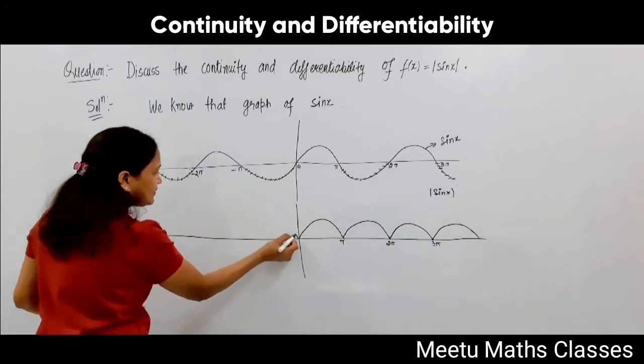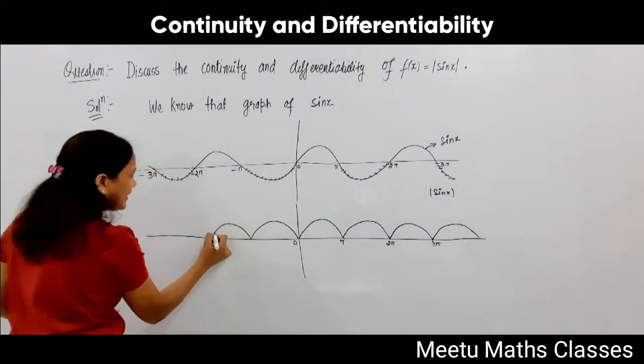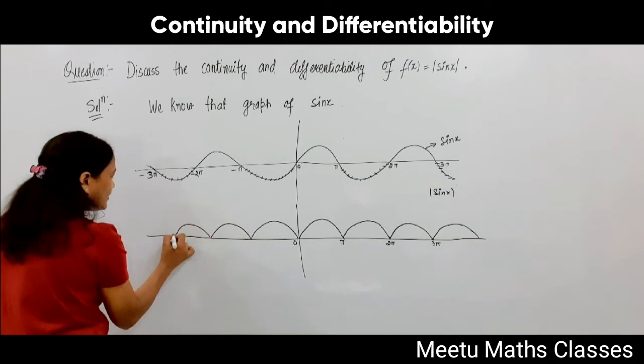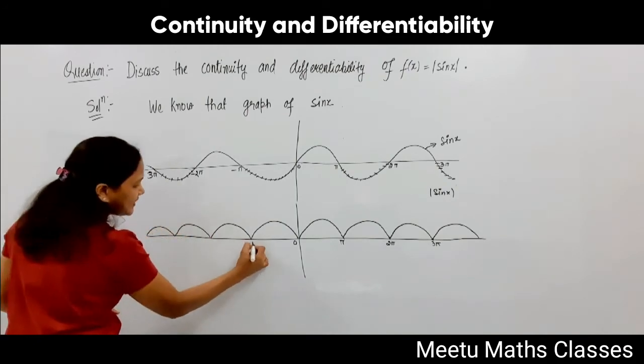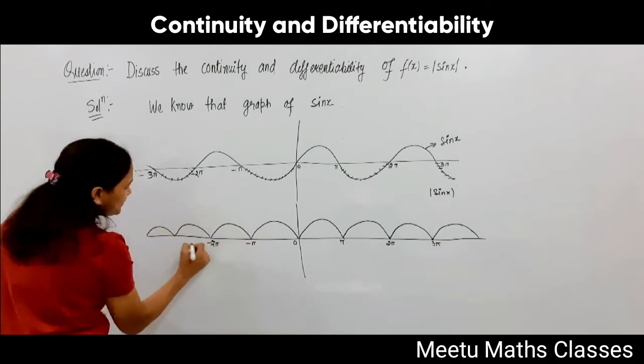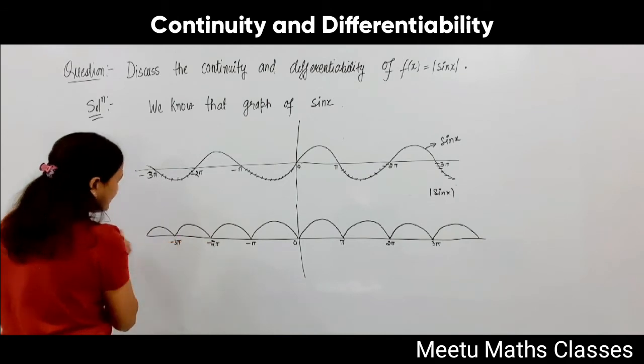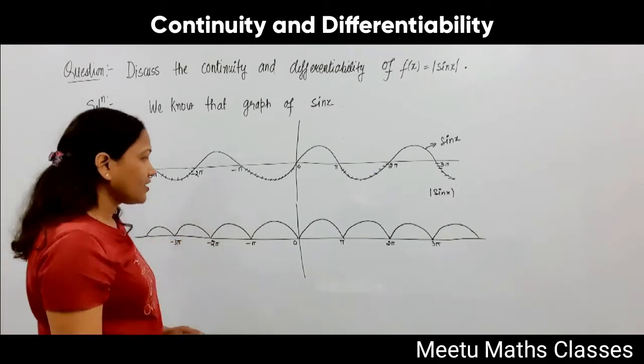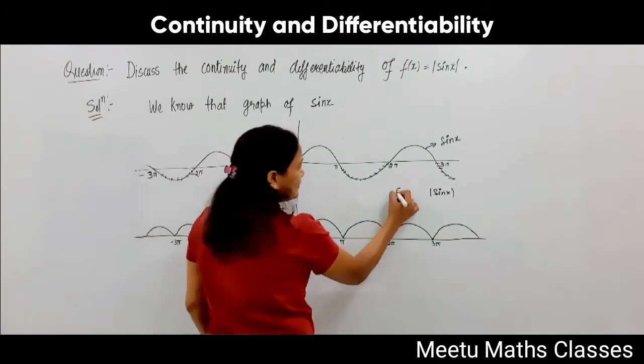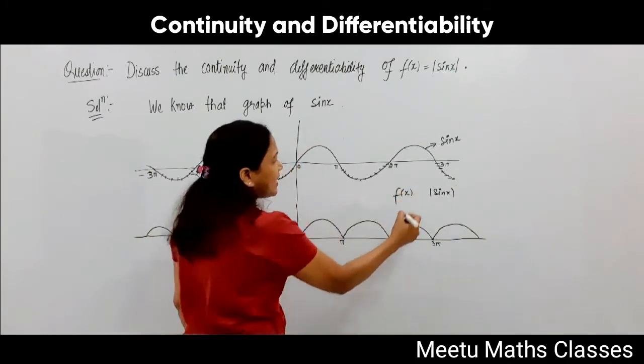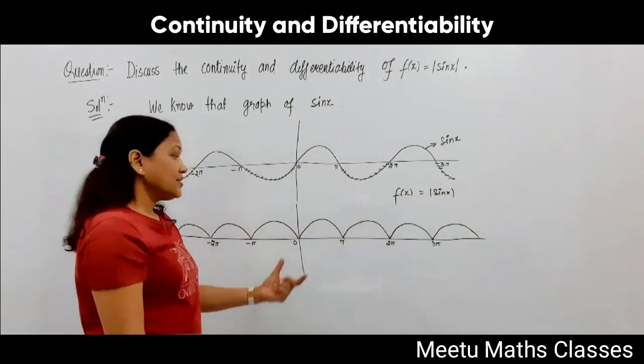This negative part will become positive and your graph will become like this: minus π, minus 2π, minus 3π and so on. So this is the graph of modulus sine x, and this is our function.